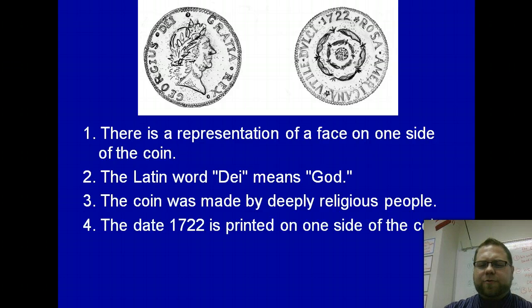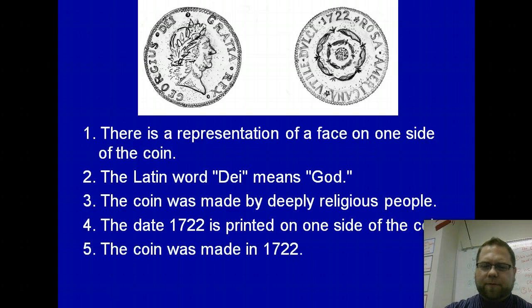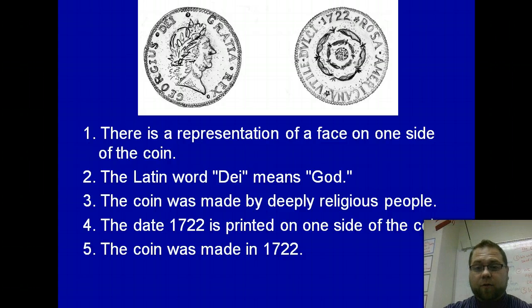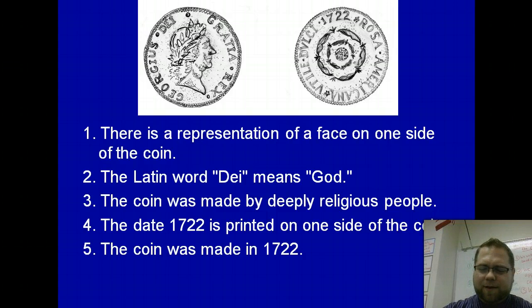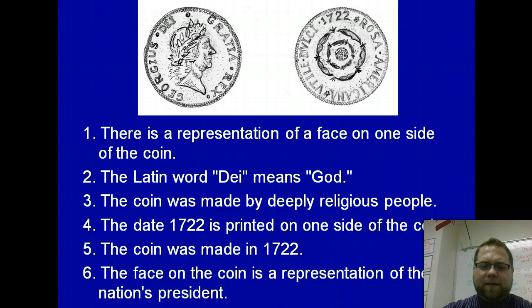The date 1722 is printed on one side of the coin — that's an objective fact, you see 1722 on the coin. But saying the coin was made in 1722 would be an inference, because they just might have really liked 1722. And the face on the coin is a representation of the nation's president — that would be an inference we would make, but it might just be somebody they like a whole lot.